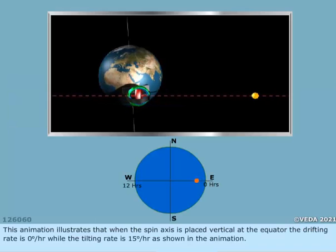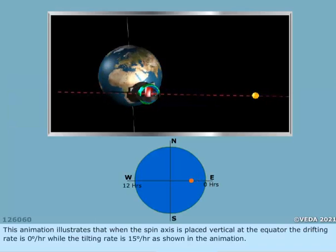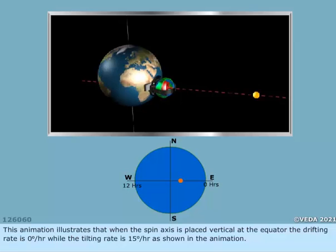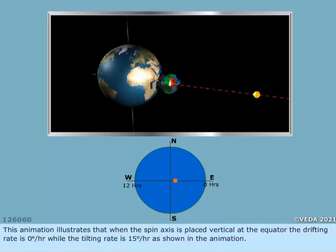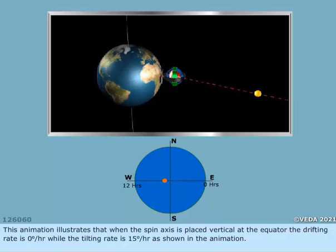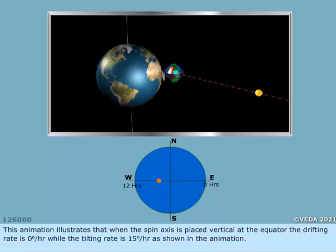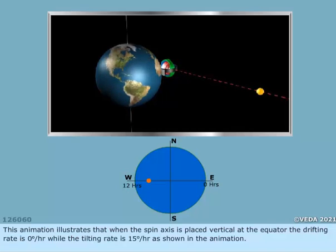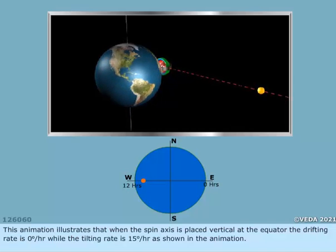This animation illustrates that when the spin axis is placed vertical at the equator, the drifting rate is 0 degrees per hour, while the tilting rate is 15 degrees per hour, as shown in the animation.